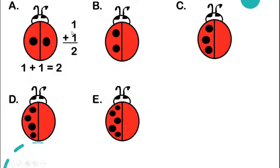One below the other: one plus one is equal to two. Using the spots of our ladybug, we can identify the addition sentence and the sum. Now it's your turn — I want you to pause the video and answer letters B, C, D, and E in your math notebook.